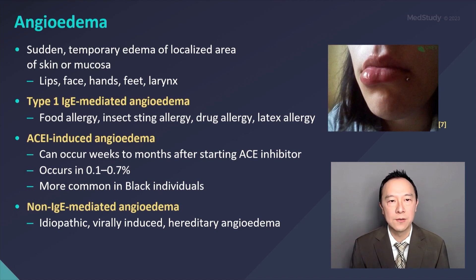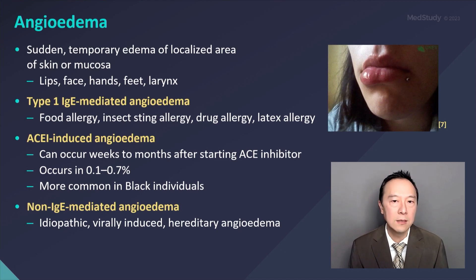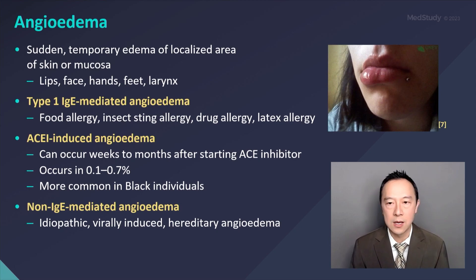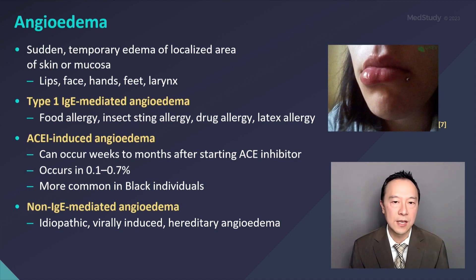There are different types of angioedema. You can have Type 1 IgE-mediated angioedema, which includes food allergies, insect sting allergy, drug allergies, and latex allergy. You can also have ACE inhibitor-induced angioedema.